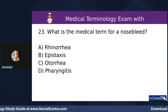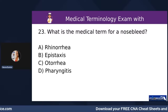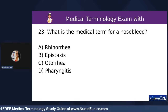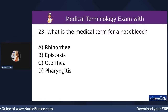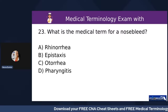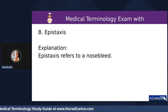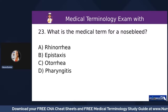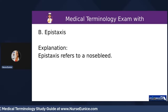Number twenty-three: what is the medical term for a nosebleed? A) rhinorrhea, B) epistaxis, C) otitis, or D) pharyngitis. We know it's not D because 'itis' means inflammation. The prefix 'oto' or 'ota' in front of a word refers to the ear. The answer is B, epistaxis, which refers to a nosebleed. Rhinorrhea refers to a runny nose.